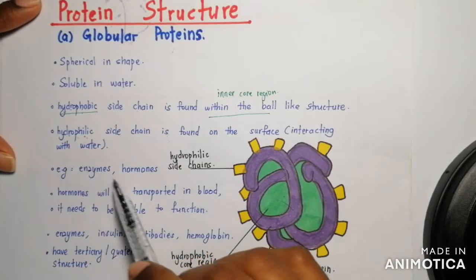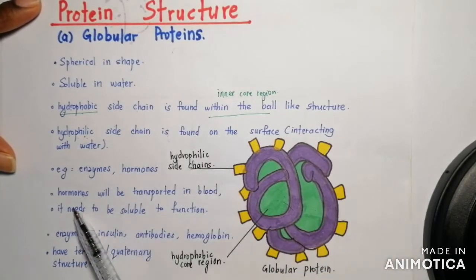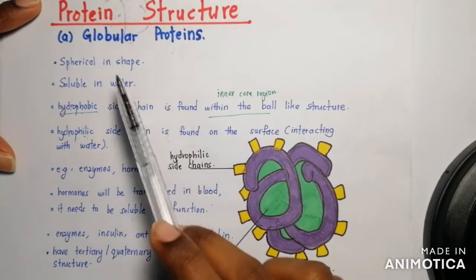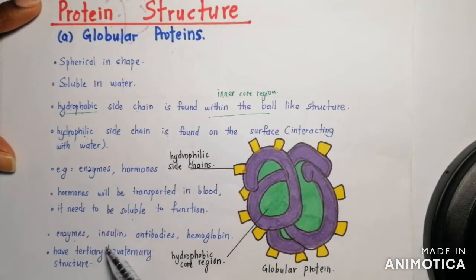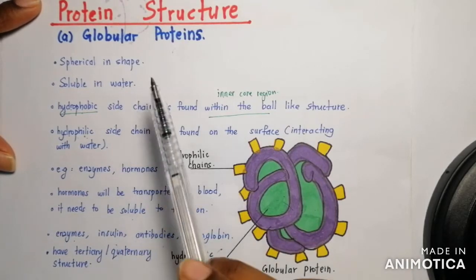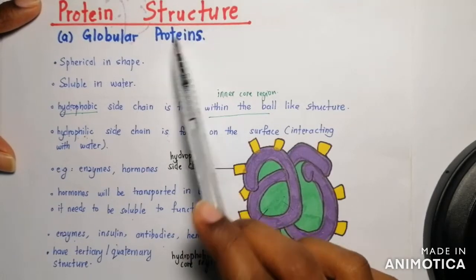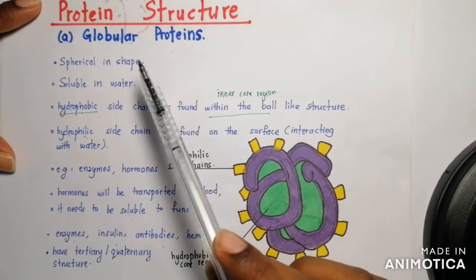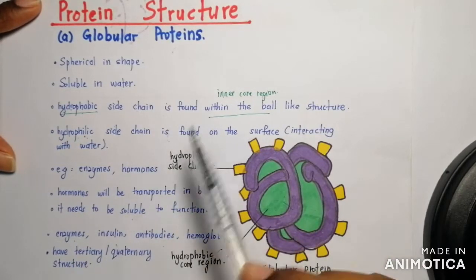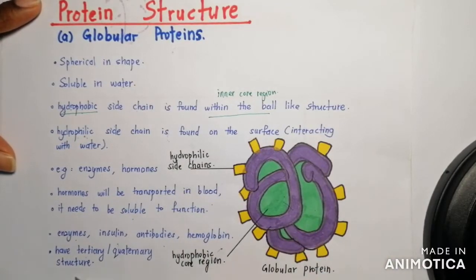Enzymes and hormones are globular proteins because hormones are transported in blood and therefore need to be soluble to function. Examples of globular proteins are enzymes, insulin, antibodies, and hemoglobin. All of these are globular proteins in terms of structure, and most globular proteins have tertiary or quaternary structure.